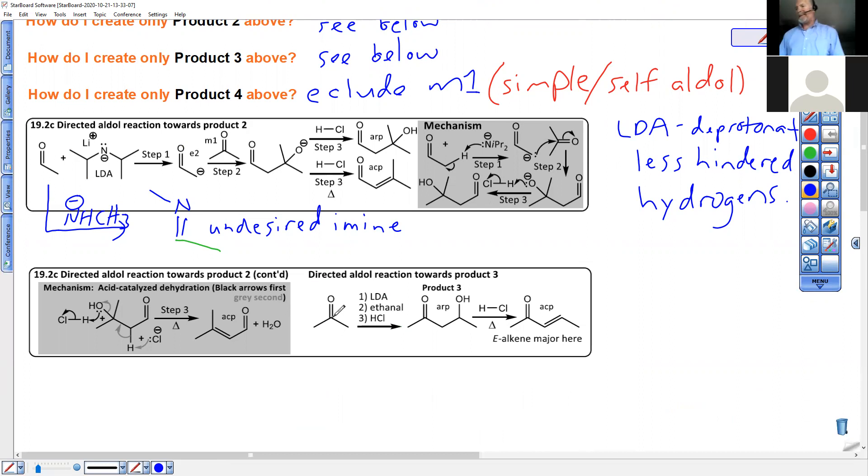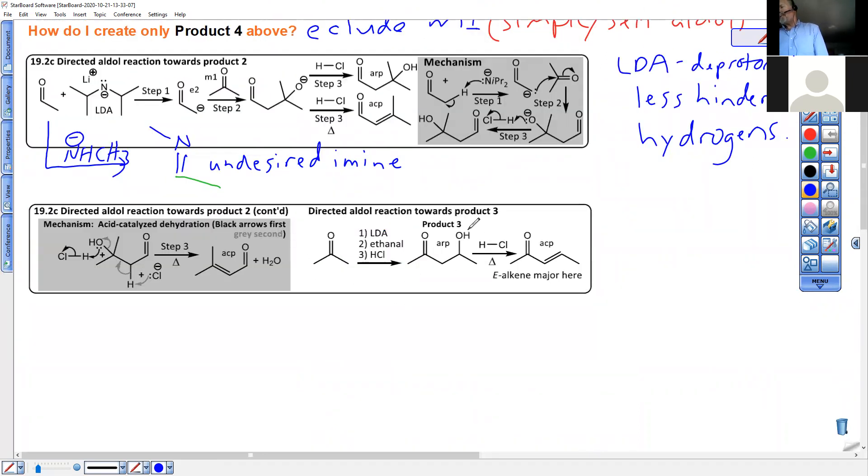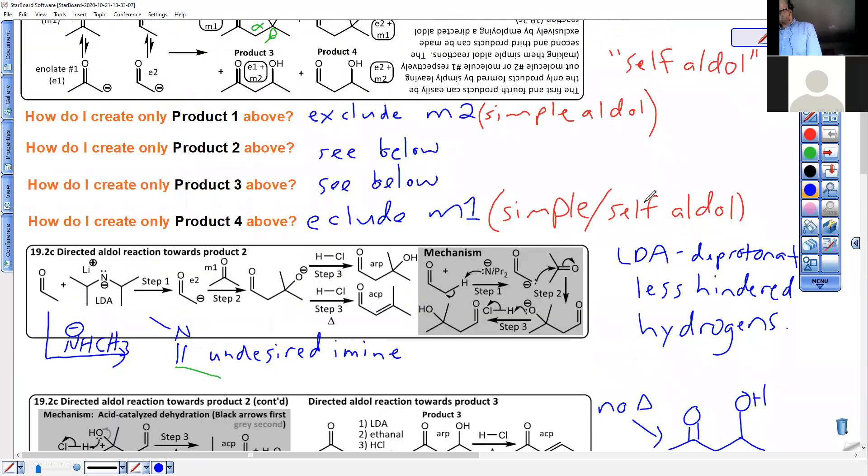And there's the summary of how to make product three. Start with a different material. Start with this thing that needs to become an enolate instead of this thing. There's the LDA. Ethanal was the other species. That's this thing right here. Ethanal, HCl to protonate. HCl and heat if you want the condensation, leave the heat out and you'd have an alcohol on the beta position to make product three. That is product three. And there you have it. We have directed aldol reactions and condensations. And they are very useful when we want to have a result that's not a self or simple aldol.